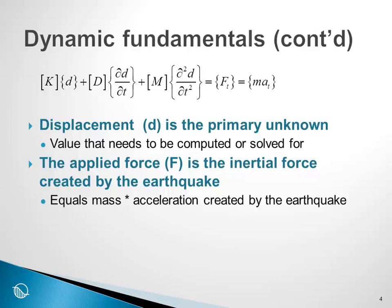The primary unknown in this equation is the displacement — the value that needs to be computed or solved for. The applied force F on the right-hand side of the equation is the inertial force created by the earthquake, equal to the mass times the acceleration created by the earthquake. So the objective of the analysis is to determine the displacements, called the primary unknowns.